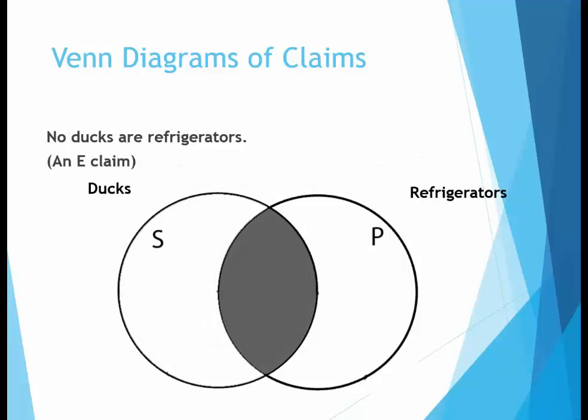Here's the Venn diagram for the E claim. Notice that the area where the two circles overlap is shaded. This indicates there aren't any examples of ducks that are also refrigerators — the only ducks there are are outside of the P category.